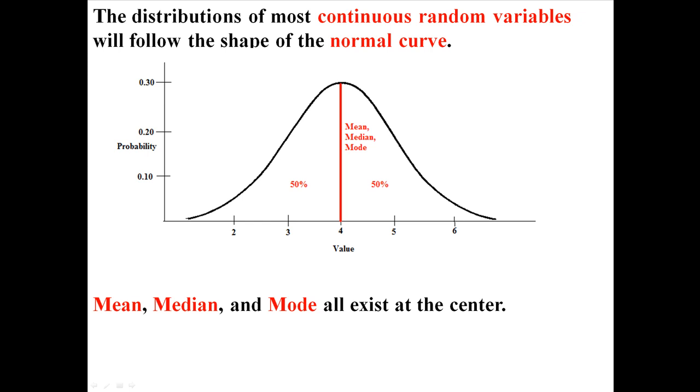So below the mean, median, and mode, 50% of the scores lie. And above it, 50% of the scores lie, because it is exactly in the middle of the distribution.